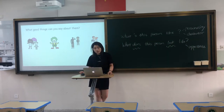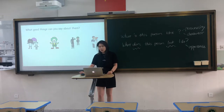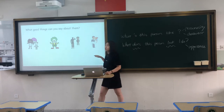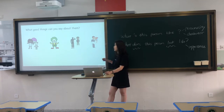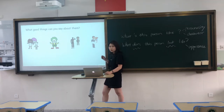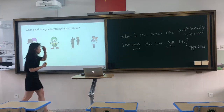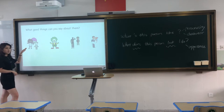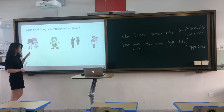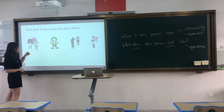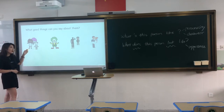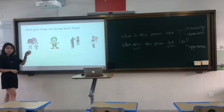Let's start with positive words you can use to talk about people's character. Look at the pictures, everyone. What good things can you say about them? What are they doing, and how do you think about their behavior? For example, let's see the first picture. What can you see? It's a girl and a little boy. What's she doing? She has an umbrella, and she puts the umbrella on the little boy's head.